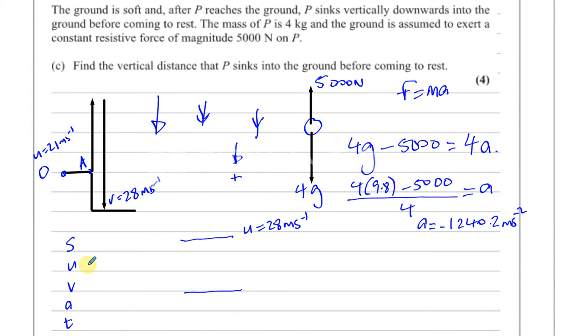In which case, this is going to be a positive value. S is what we have to find. That's what we have to find. So, U is going to be positive 28 meters per second. And V is going to be zero, because we're going to find the distance it travels before it comes to rest. A is the acceleration we found, which is acting upwards. The acceleration is acting upwards, it's slowing it down. So we're going to take that as negative, because we've taken down as positive. So you're going to have minus 1240.2 meters per second squared. And we need to find S, and it looks like we're going to use V squared equals U squared plus 2AS.